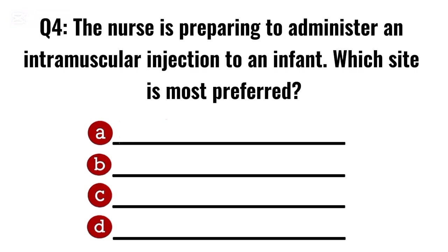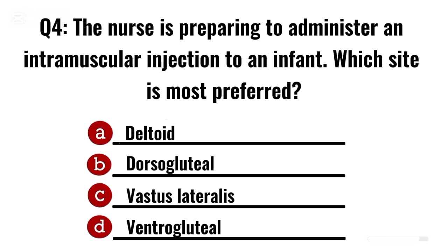Question 4. The nurse is preparing to administer an intramuscular injection to an infant. Which site is most preferred? Correct option C: Vastus lateralis.